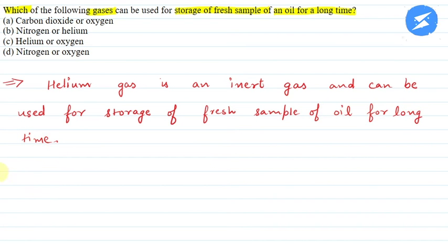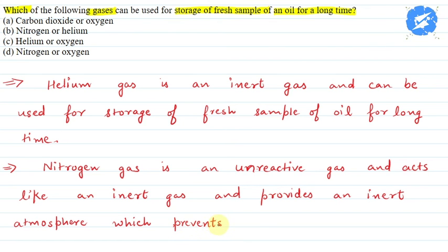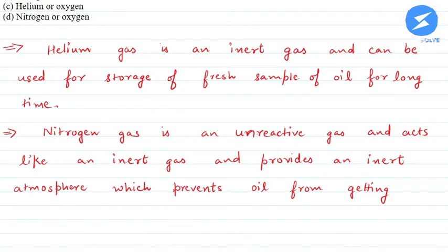Along with this, which is nitrogen gas. Nitrogen gas is an unreactive gas. It is an unreactive gas. It does not react. Unreactive gas and acts like an inert gas and provides an inert atmosphere which prevents oil from getting rancid or from getting spoiled.